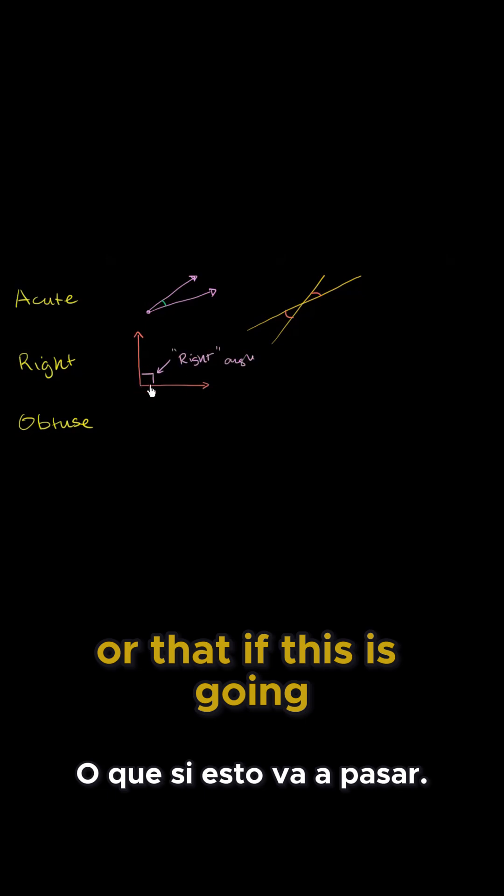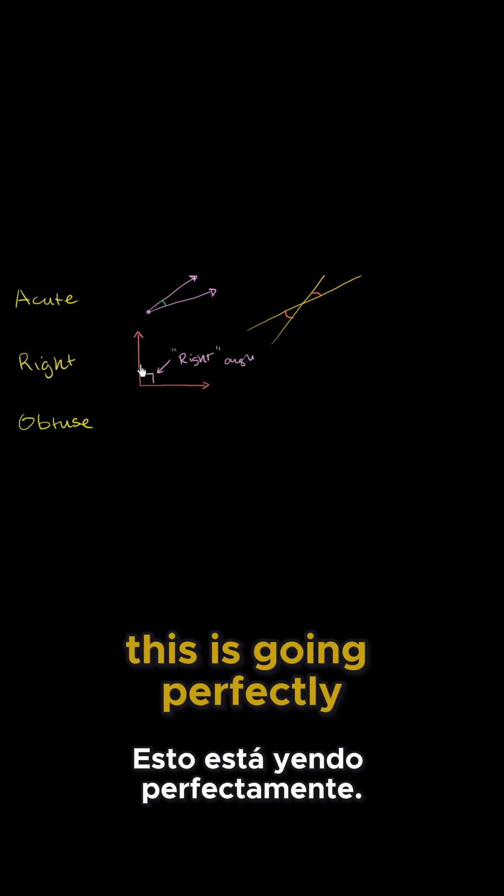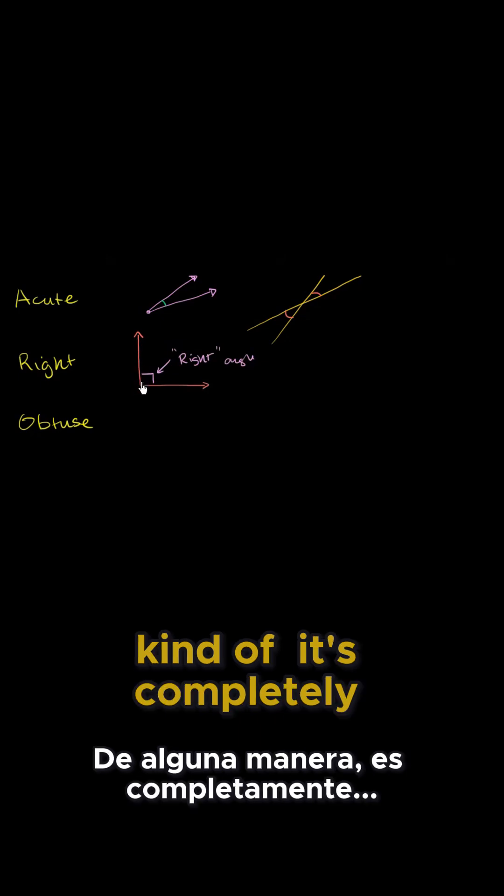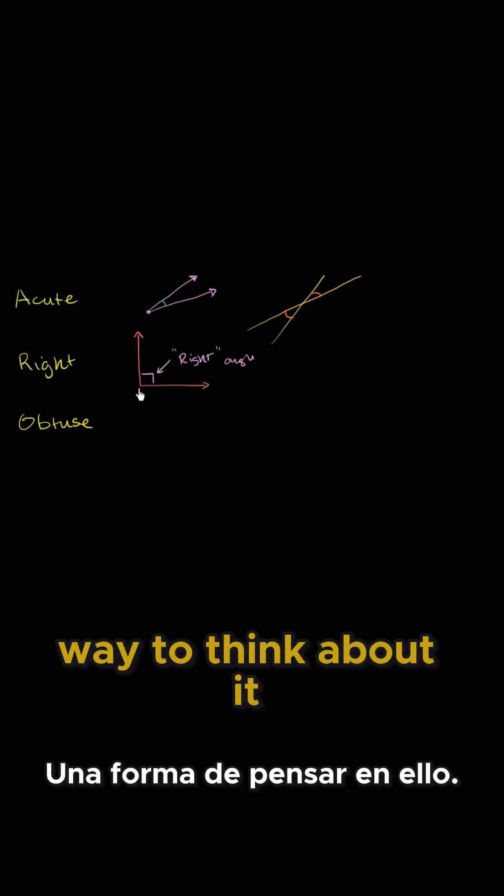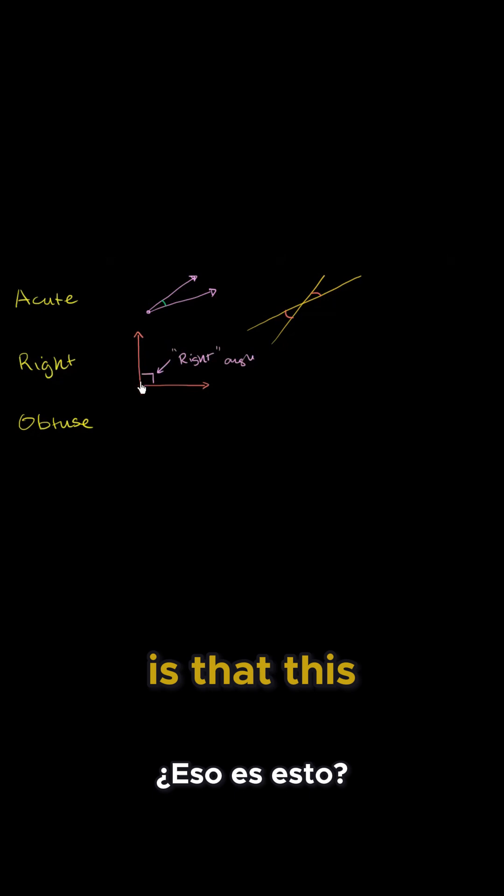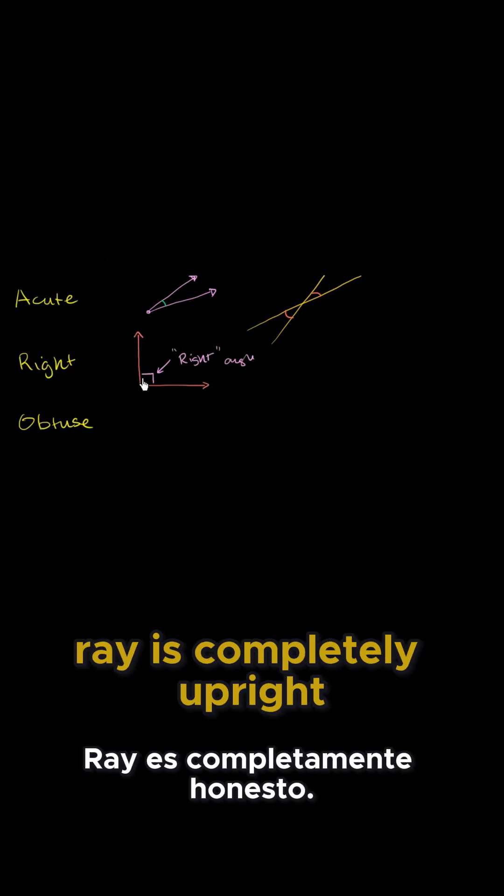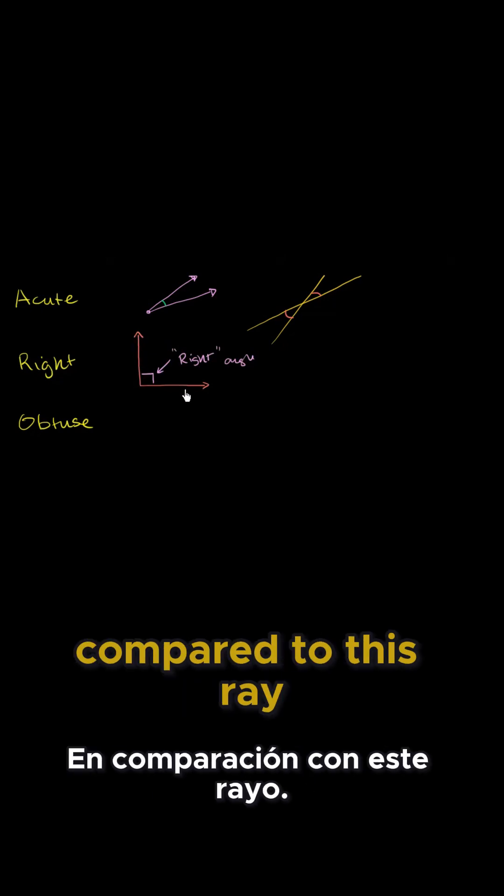Or that if this is going left to right, this is going perfectly top to bottom. The best way to think about it and why it's called right is that this ray is completely upright compared to this ray over here.